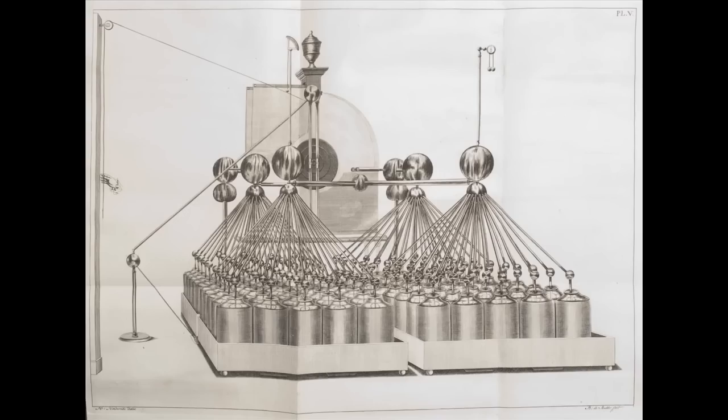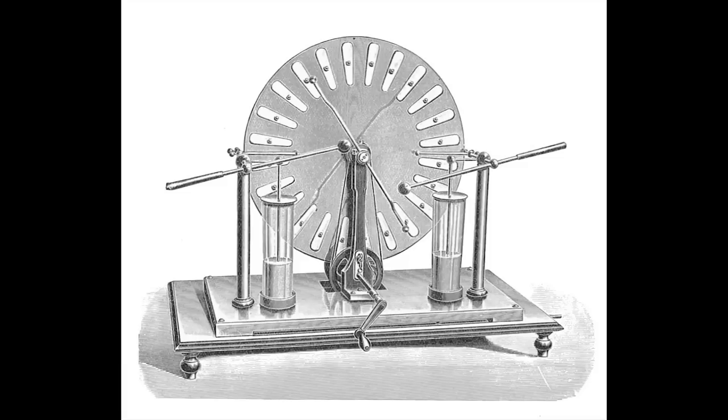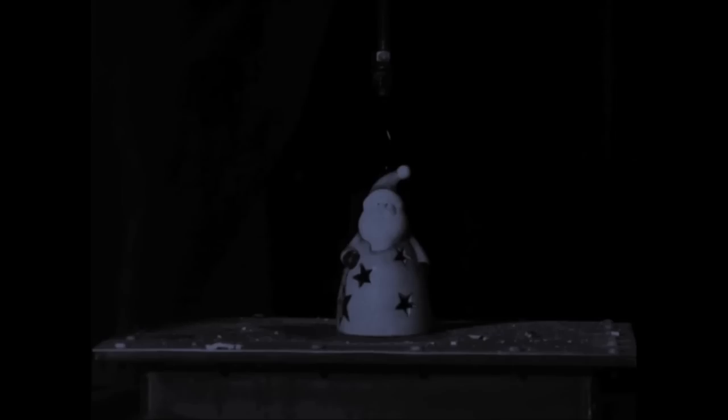When he chained many jars together, he found he could increase the capacity even more and release deadly bolts of electricity. Over the years, people focused on more effective ways of building up charge using friction machines, which could then be stored in capacitors and released as spectacular displays of man-made lightning.